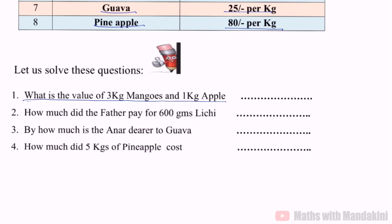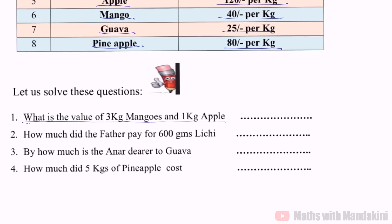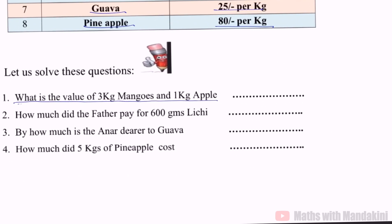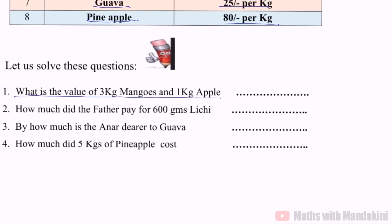Now we have 3 kg mangoes and 1 kg apple. What will be the total cost? Cost of 1 kg mango is 40 rupees per kg, so cost of 3 kg mangoes will be 40 into 3, that is 120 rupees.